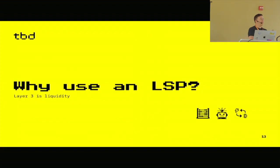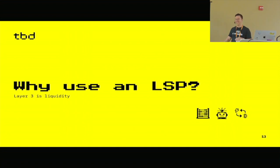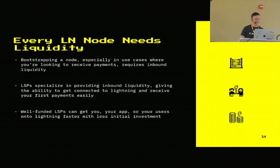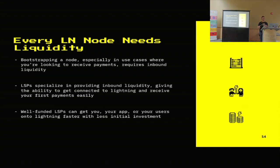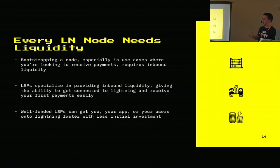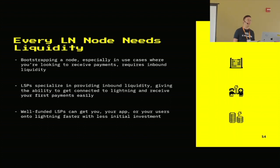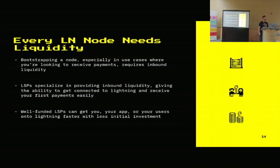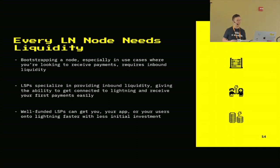So why use an LSP? Every Lightning node needs liquidity. When you use a Lightning service provider, download a wallet, or run your own node, the first thing you find out is that you need liquidity — you need to open channels. Especially when you want to receive payments, you need someone to open a channel to you, unless you're doing something fancy like a swap. LSPs specialize in providing this liquidity. Inbound liquidity is one of the first things an LSP has to do to get users on board.